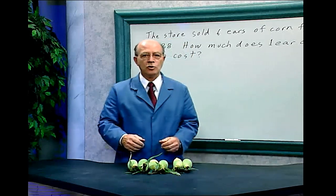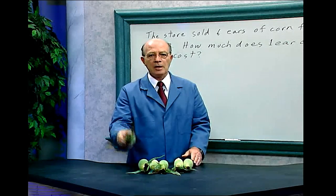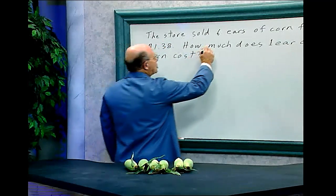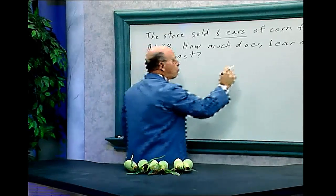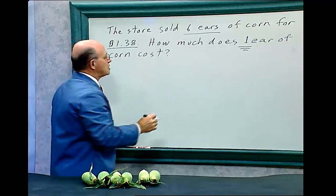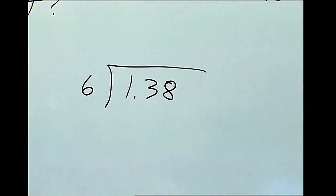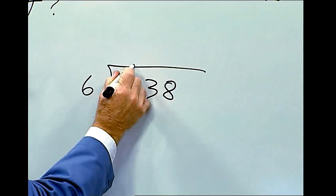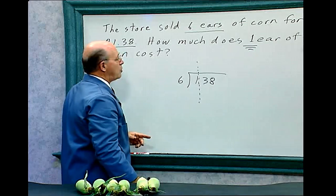Dividing with money. The store sold six ears of corn for $1.38. How much does one ear of corn cost? So we have to divide $1.38 by six. Now in dividing with money, it's crucial that you keep this decimal point and go straight up. Keep this in line — that's very important when doing math.